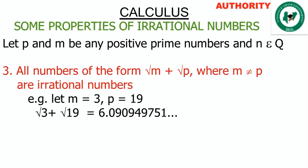Property three: all numbers of the form root m plus root p, where m is not equal to p, are irrational numbers.